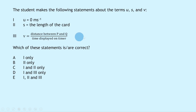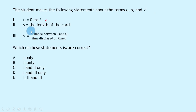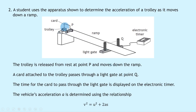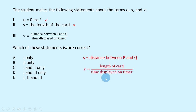Statement 1, U = 0 m/s, is true because the trolley was released from rest. Statement 2, S equals the length of the card, is false — S is the distance between P and Q, the displacement travelled. Statement 3, V equals the distance between P and Q divided by the timer reading, is also false — V is found using the length of the card divided by the time displayed on the timer. So only statement 1 is correct, giving answer A.